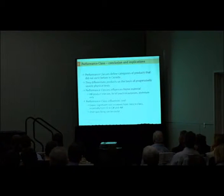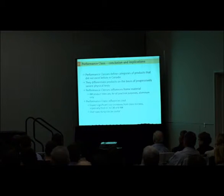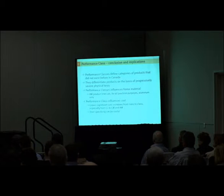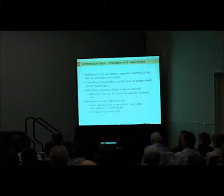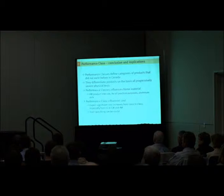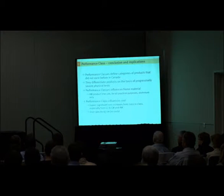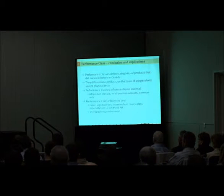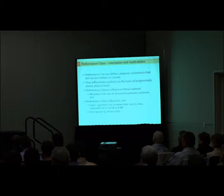It also influences cost. You'll see significant cost increases from one class to the next, especially as you go up to LC, CW, and AW. You're going from somewhere around $15 or $20 a square foot to maybe $100 or $120 a square foot or more. So it's nice to say you're going to specify CW or AW, just be prepared that costs will probably be doubled compared to a residential window. Over-specifying can be costly.